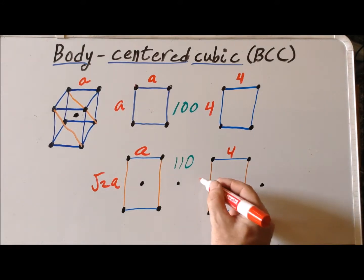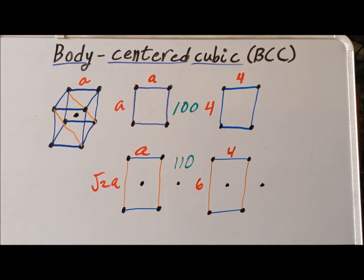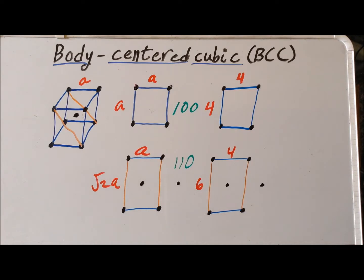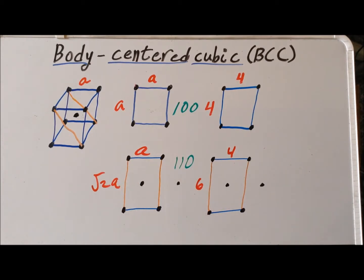So we can again make this length a length of 6 studs times 4. And this 4 by 6 isn't exact, but it's within 10% of the exact dimensions of the 110 face where we have one side A and then the long side of the rectangle has a length of square root of 2 times A, with the central atom at the center of the rectangular cell.